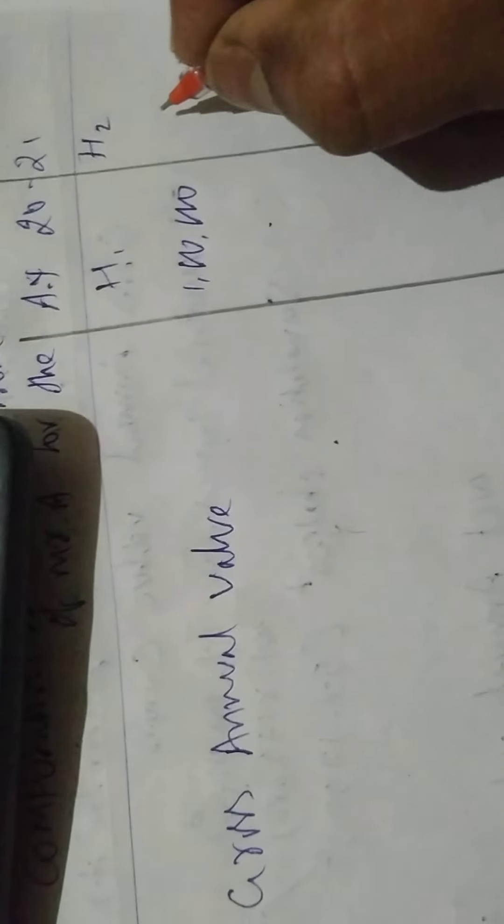Computation of income from house property of Mr. A for AY 2020-21. House 1 GAV = 1,00,000; House 2 GAV = 60,000.